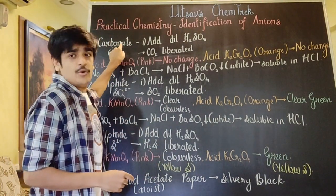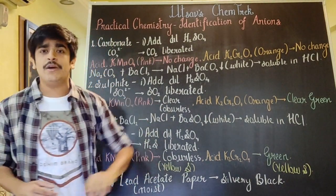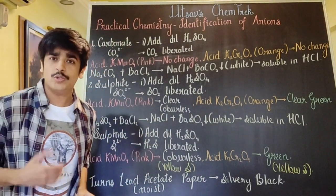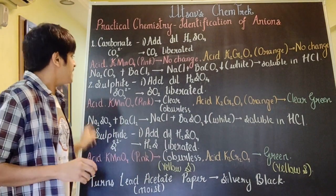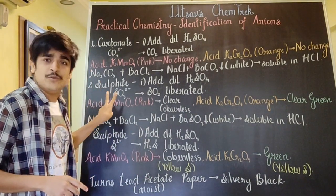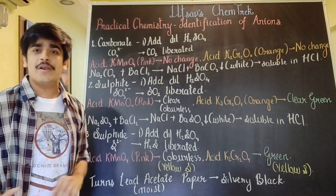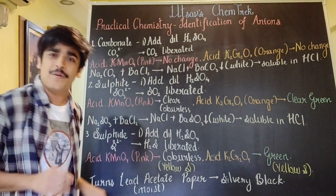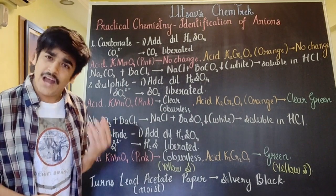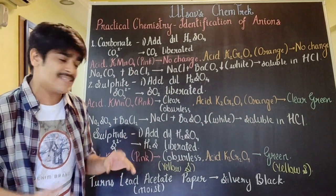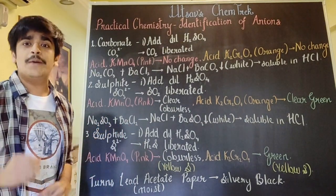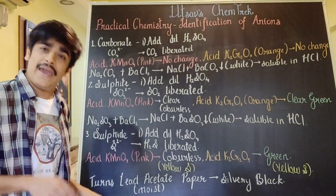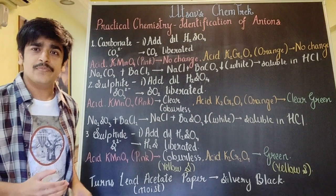The first one is carbonate, given by the formula CO3 2-. The next one is sulfite, given by the formula SO3 2-, and the last one is sulfide, given by the formula S2-.